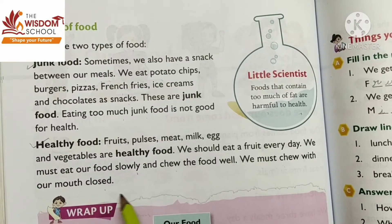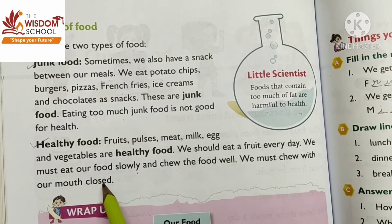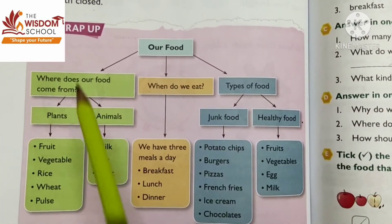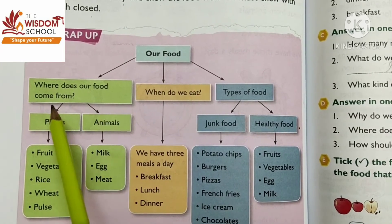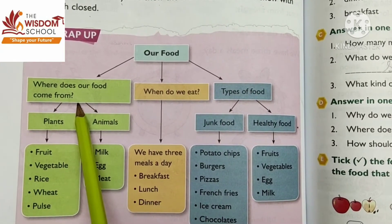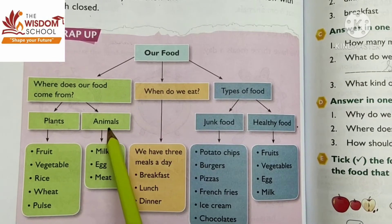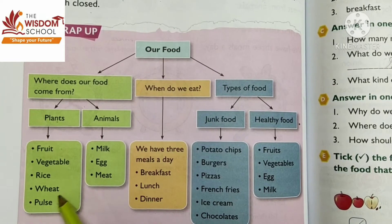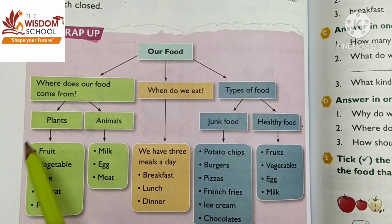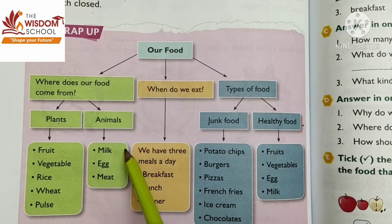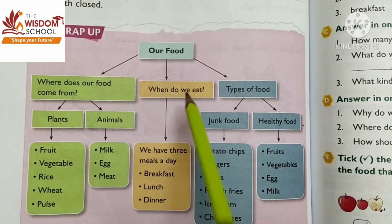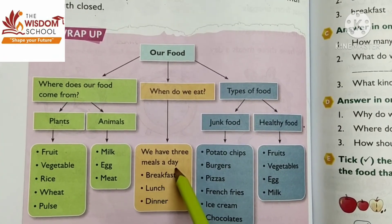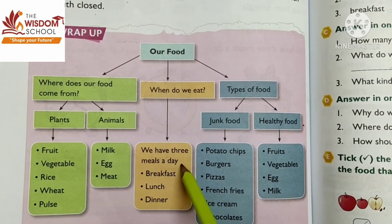So this was all about our chapter: Our Food. Now let us wrap up this chapter. Where does our food come from? From plants and animals. From plants we get fruits, vegetables, rice, wheat, and pulses — these are all plant food items. Animal food items include milk, eggs, and meat. When do we eat food? We have three meals a day.